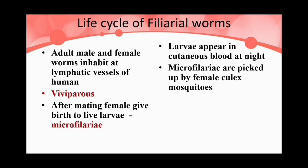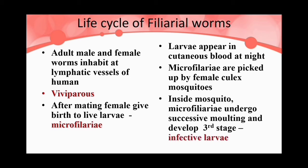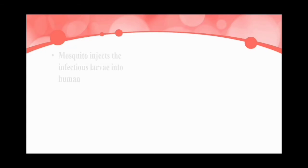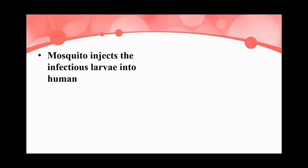If any mosquito bites this person, the microfilariae are picked up by the female mosquito. Inside the mosquito, the larvae undergo molting — the shedding of the exoskeleton — and develop into the third-stage larva, which is the infective larval stage. When this mosquito again bites a human, it injects this infectious larva into the human with its saliva.